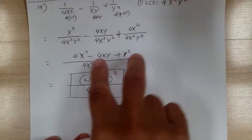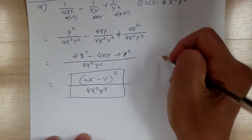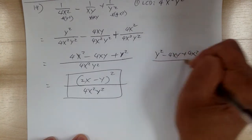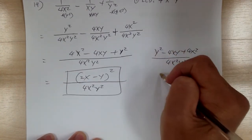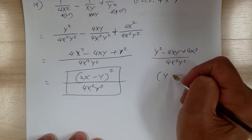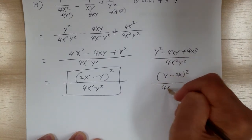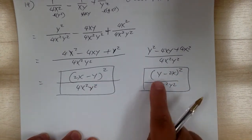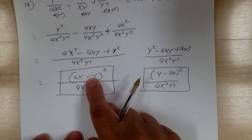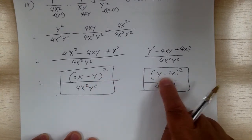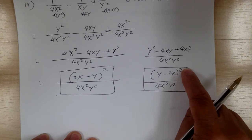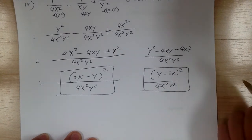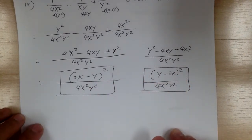In the book, they didn't switch the order, so they have y squared minus 4xy plus 4x squared over 4x squared y squared. When you factor, you get y minus 2x, squared, over 4x squared y squared. Either answer is acceptable — they're the same, because 2x minus y is the negative of y minus 2x, but when you square it, negative one squared equals one. So both answers are equal.